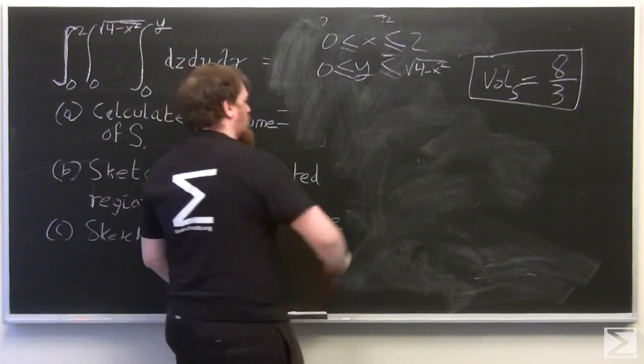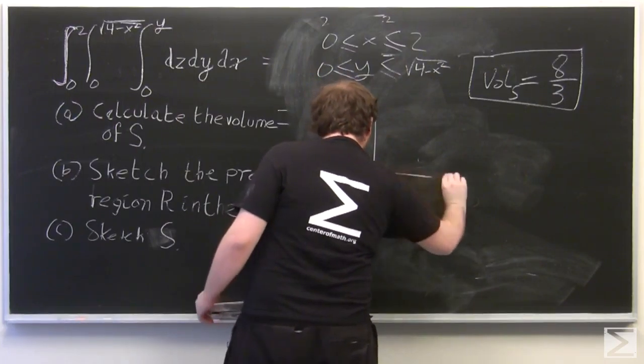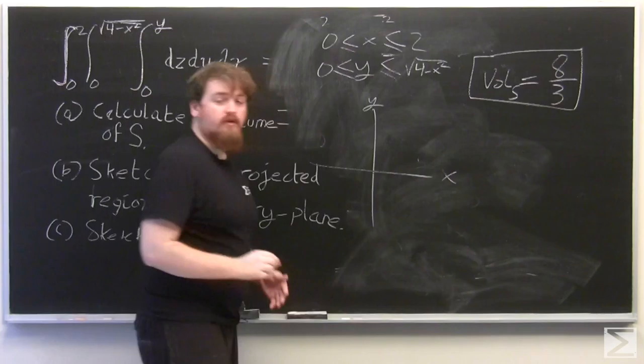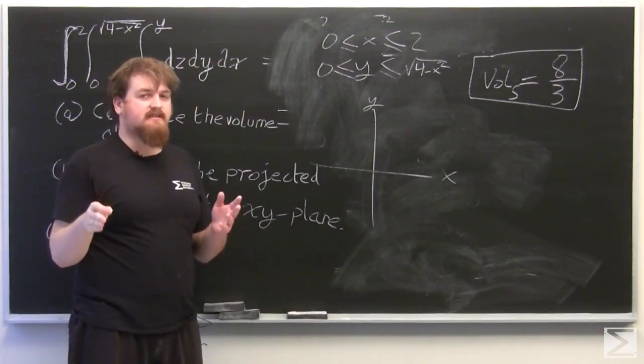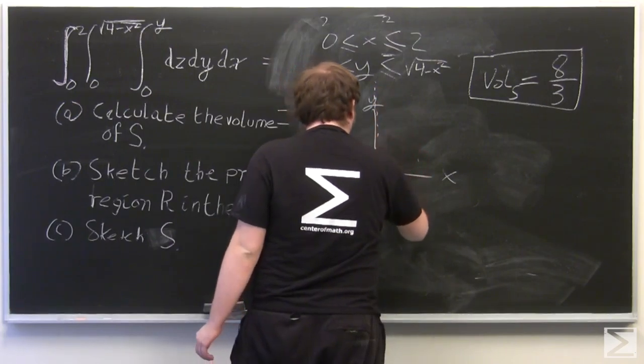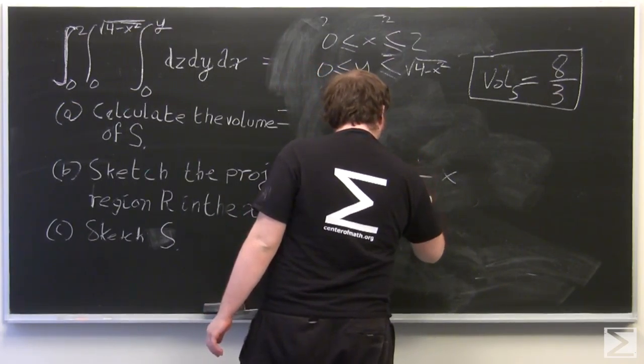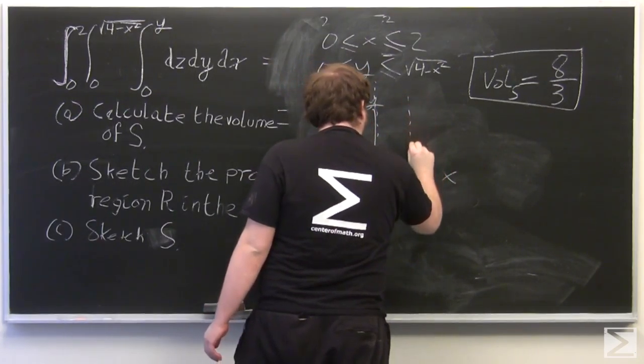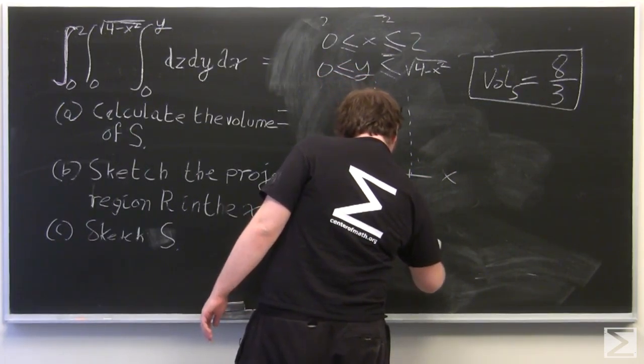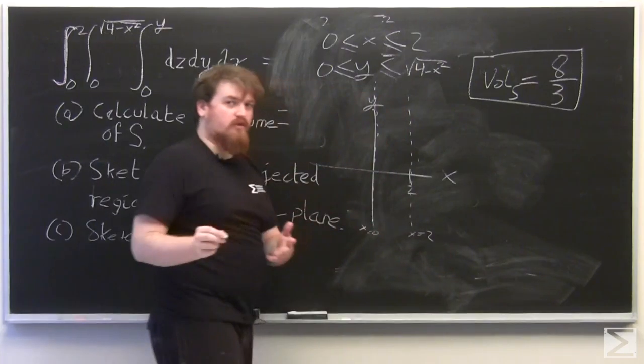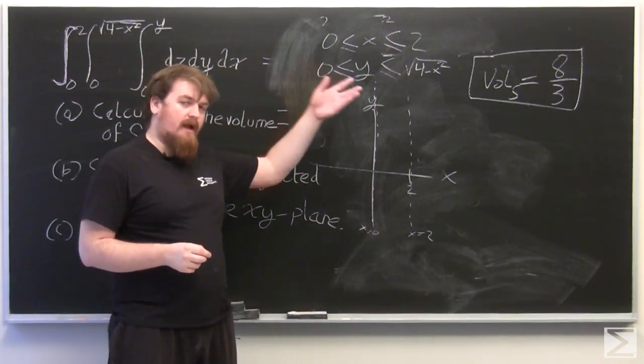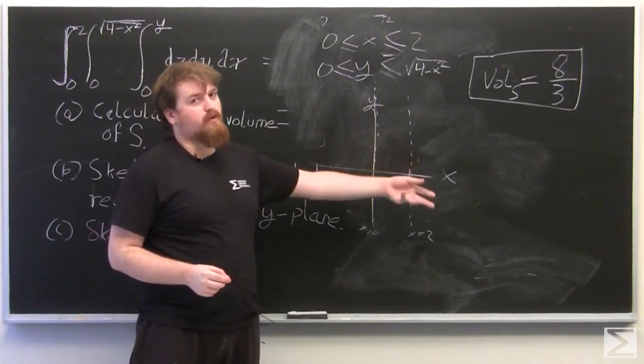So to sketch R, we start by drawing our xy plane. We have that 0 is less than or equal to x is less than or equal to 2. So our region is going to be between the y-axis and the vertical line where x equals 2. We also have that 0 is less than or equal to y, so it's going to be in the first quadrant part of this band.